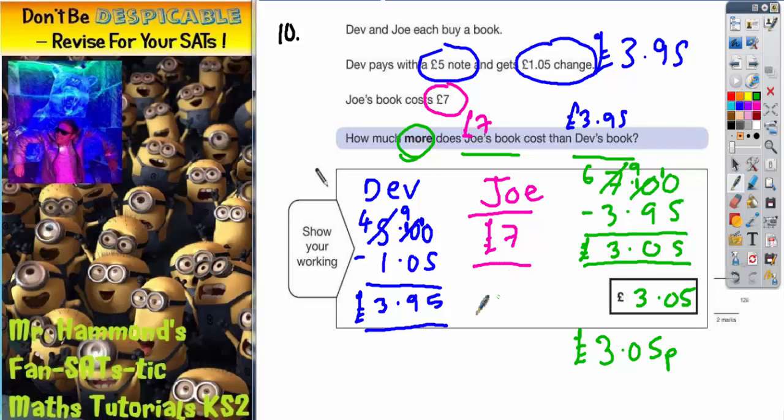You could count up from one pound five up to five pounds and you'll still get £3.95. You could have counted up from £3.95 up to seven pounds and you'll still get £3.05. Different methods—it's up to you which one you use, but you should really be able to do both.